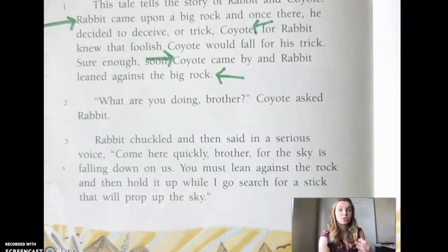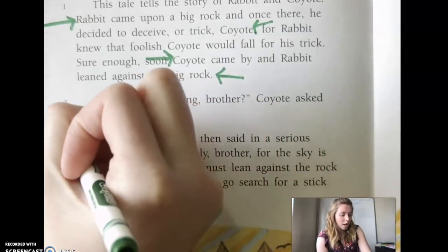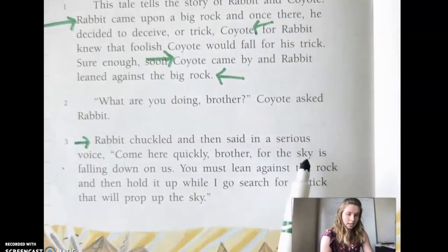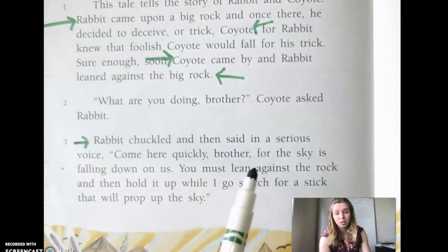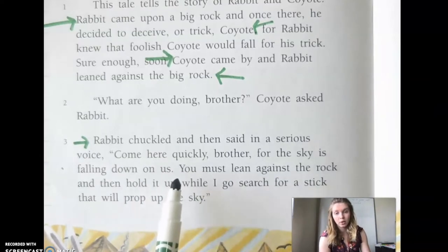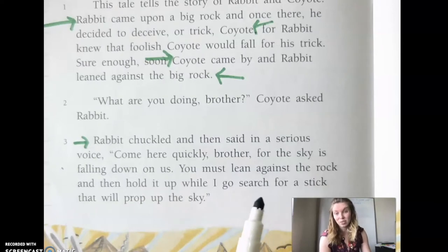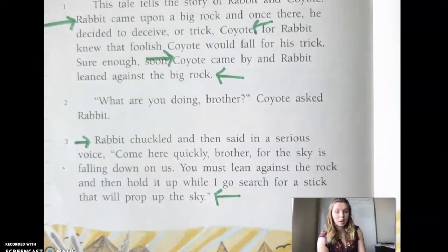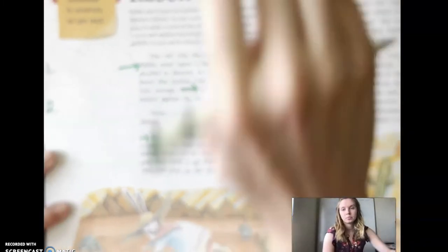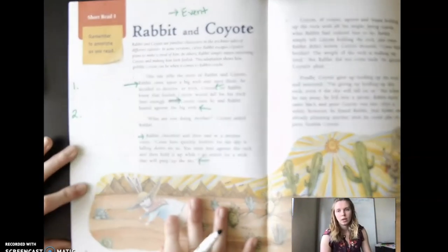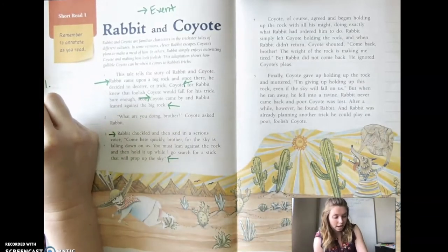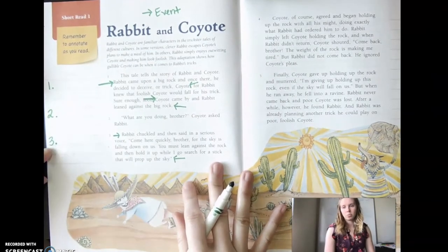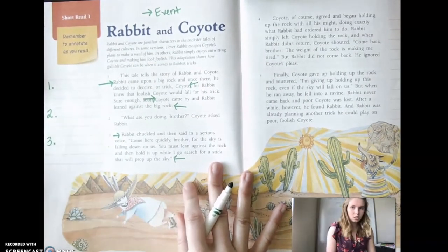The reason for that is Rabbit is starting to trick Coyote. The fact that he chuckled and then said in a serious voice isn't really part of the event, but the event starts here. Rabbit said, Come here quickly, brother, for the sky is falling down on us. You have to lean against this rock and hold it up while I go search for a stick. So Rabbit's telling him what he needs to do to hold up the sky. Here's my whole story here, and the third event just happened. So I'm going to write number three here for the third event.